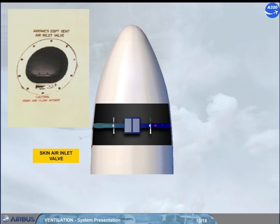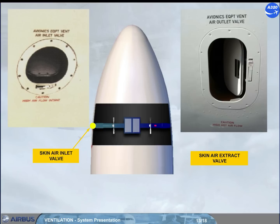The skin air inlet valve is located on the left-hand side of the aircraft, and the skin air extract valve with its small flap on the right-hand side. Both valves are inspected during the pre-flight walk around for damage or obstruction.